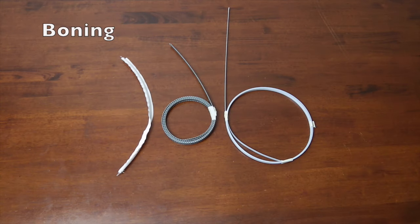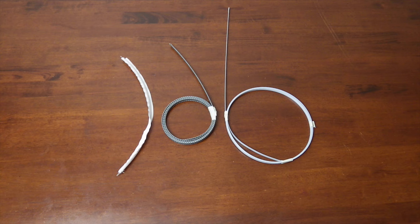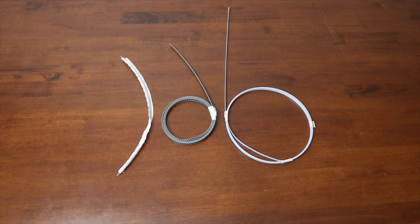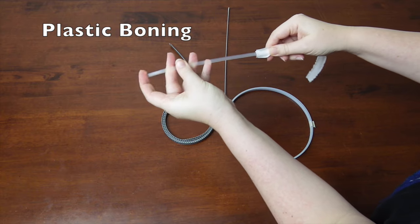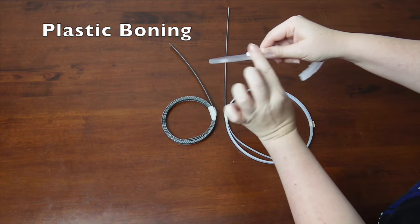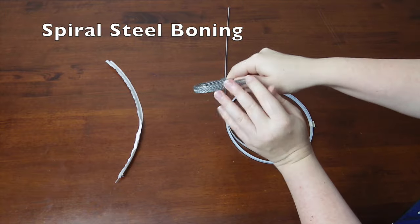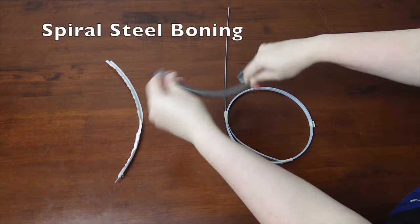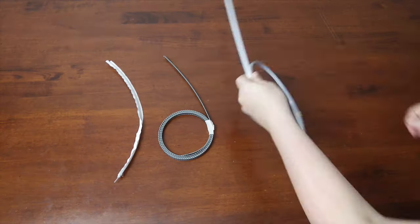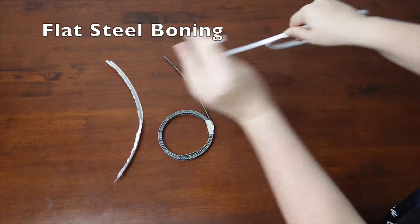Now on to boning. Boning comes in a wide variety of options. The ones shown here are plastic, spiral steel, and flat steel boning. Plastic boning is the cheapest option, but it can be quite flimsy depending on the quality. Spiral steel is very flexible, but offers good support for cosplays that require a lot of movement. And flat steel boning is the most rigid.